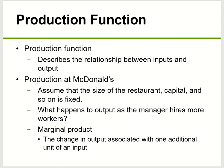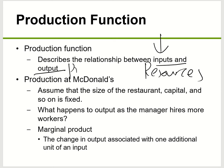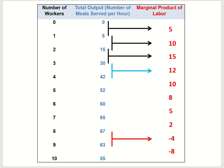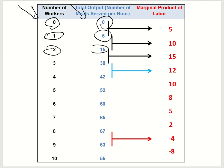Next, let's look at something called a production function. A production function describes the relationship between your input and output — how much you put into the company in resources and how much production you get out of it. Here's a basic example showing our number of workers and number of output — how many meals we serve. With zero workers, we produce nothing. One worker: five meals. Two workers: 15. Three workers: 30. Four workers: 42, and so on.